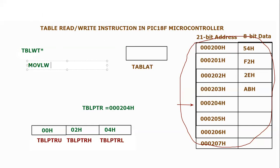Let's say I'm moving literal value 24 hex into working register, and then I'm moving working register into the TABLAT register. What is going to happen is this 24 hex will be stored in TABLAT register.